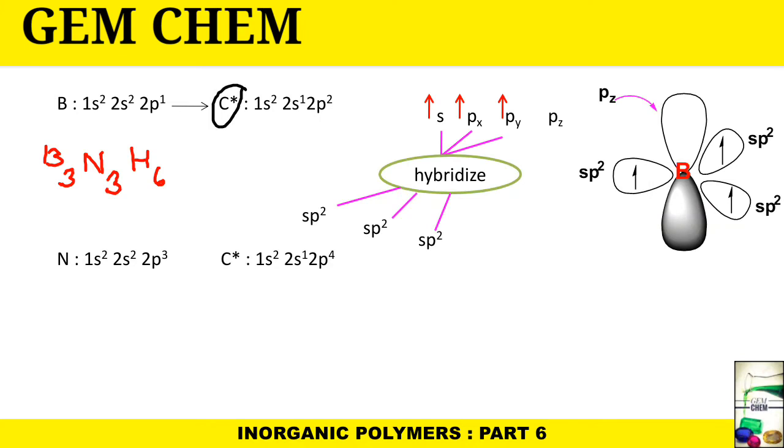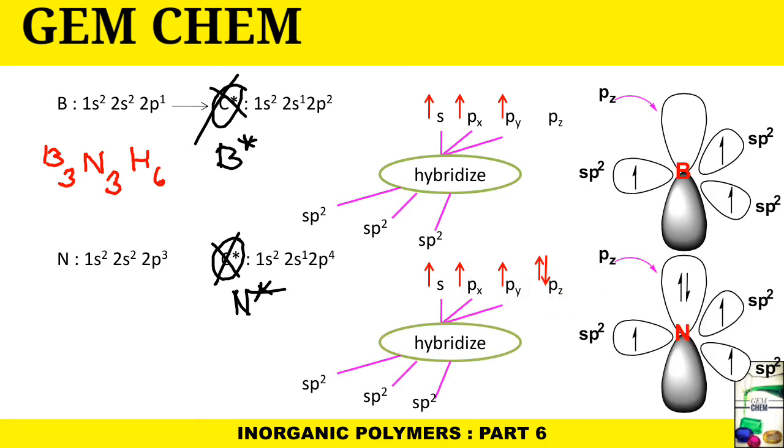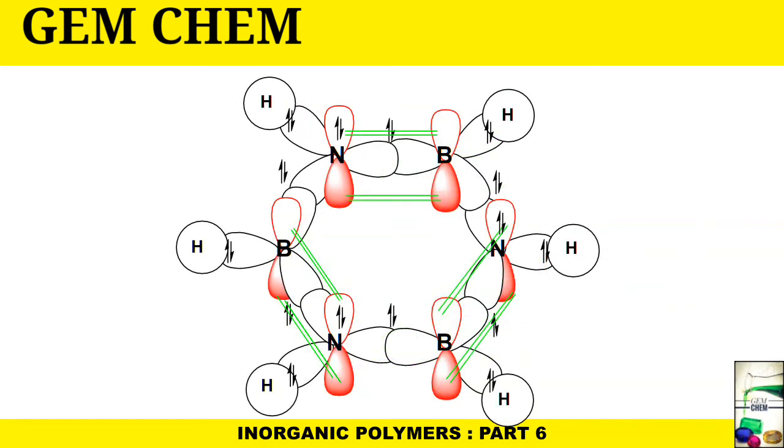If we consider nitrogen, one of the electrons from 2s will jump to 2p. For a correction, this will be boron and this will be nitrogen. The electrons here will be two electrons and here will be one electron each, because one electron from 2s has jumped into the pz orbital. When they hybridize they will give sp² hybridized orbitals. You can see here two electrons are present in the pz orbital.